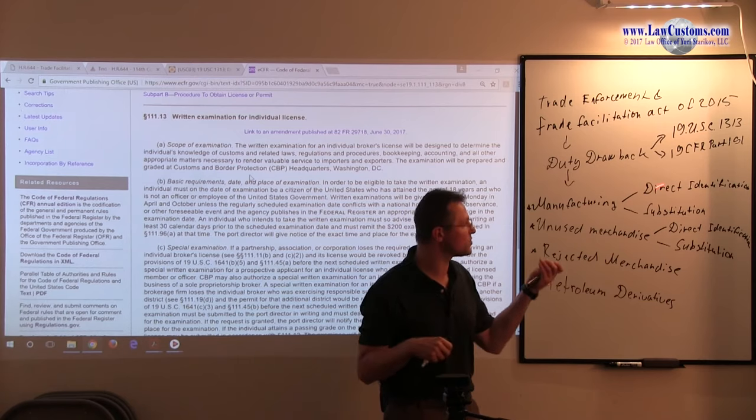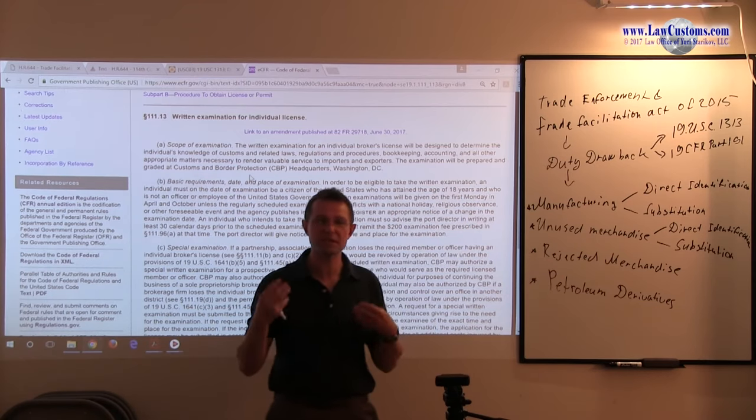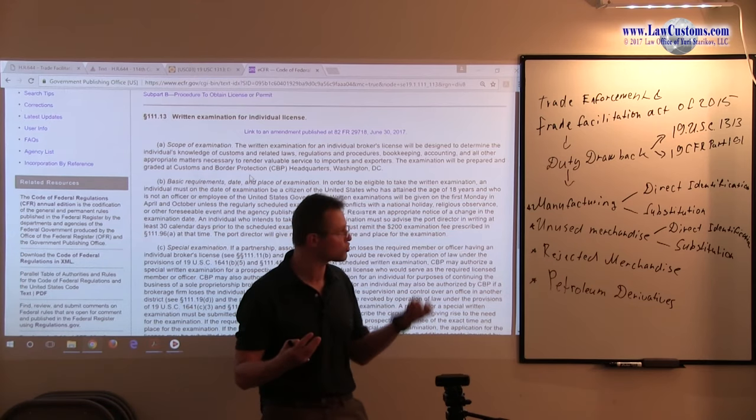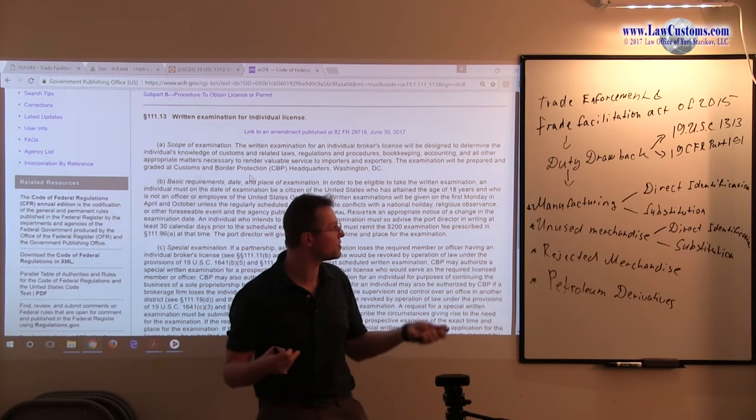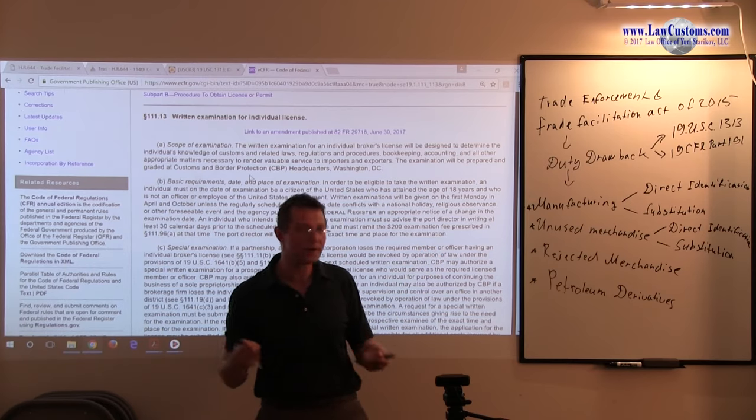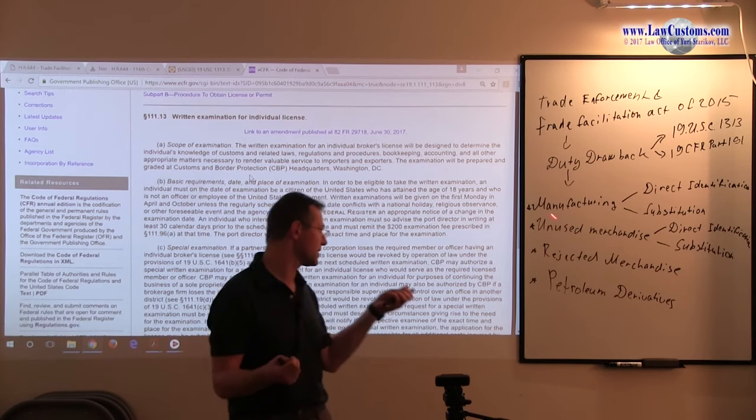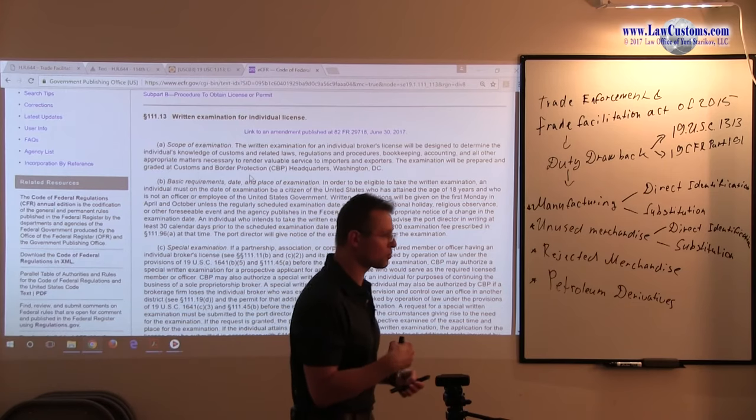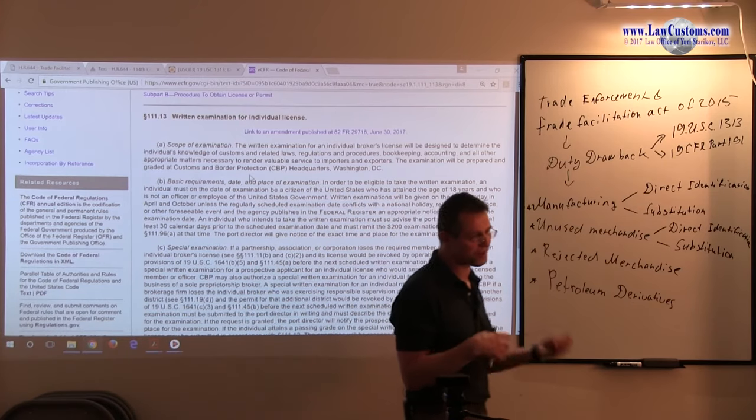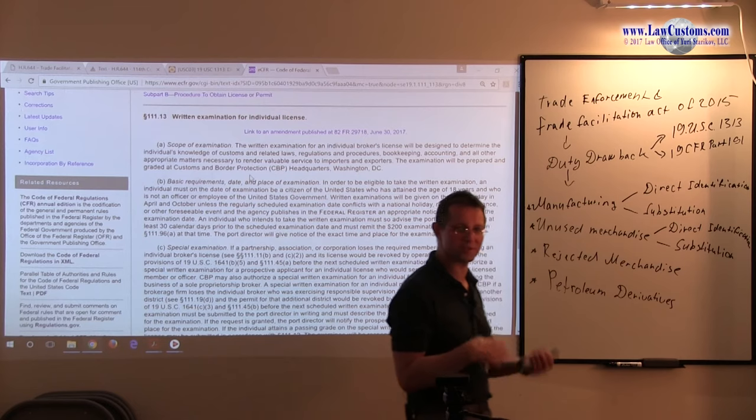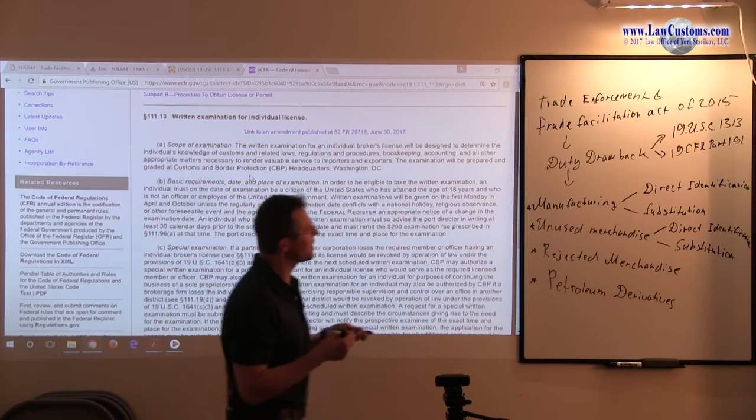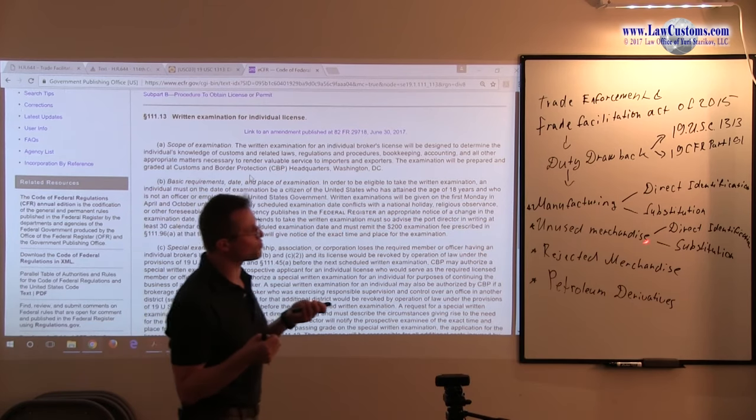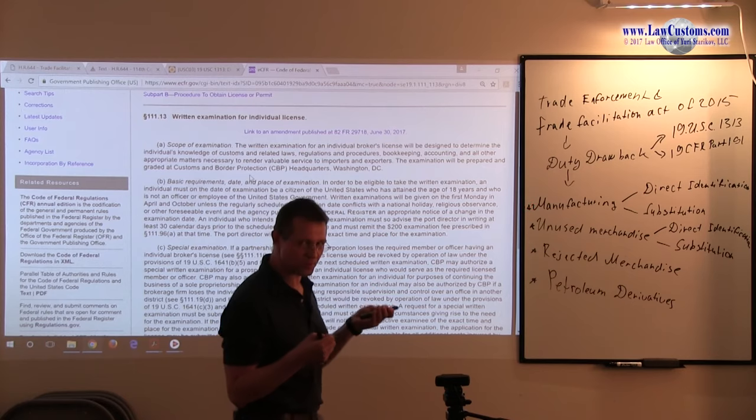So, whether it is directly or whether it is by means of substitution. As long as if the processes involve the manufacturing, the making of the new article of commerce, in other words, then you are entitled to that claim. Provided that you meet the bureaucracy requirements such as the timeframe work, such as the paperwork, etc. Now, unused merchandise. So, this is for the manufacturing. The next big one is unused merchandise drawback.